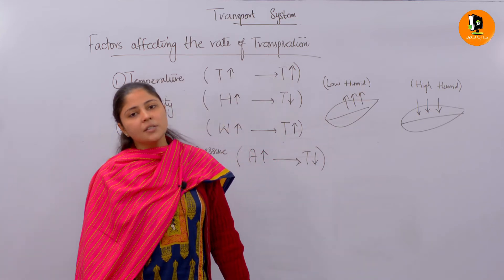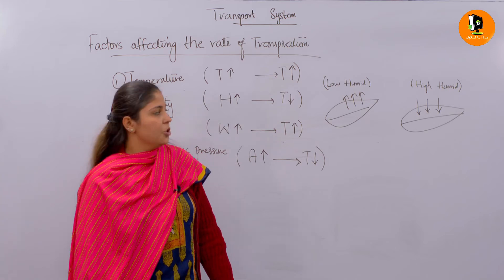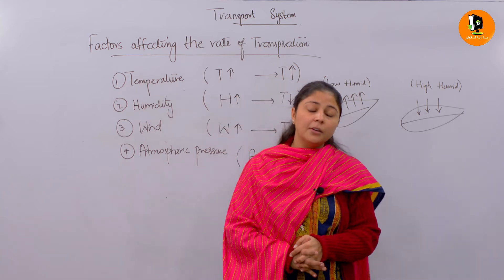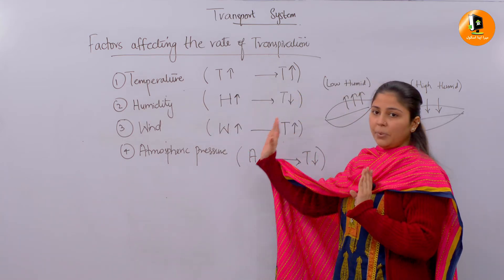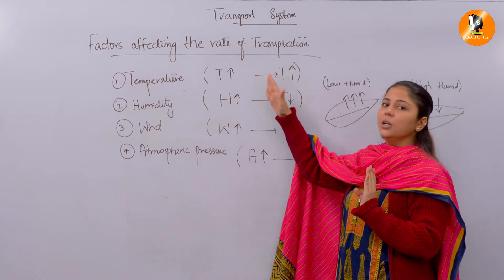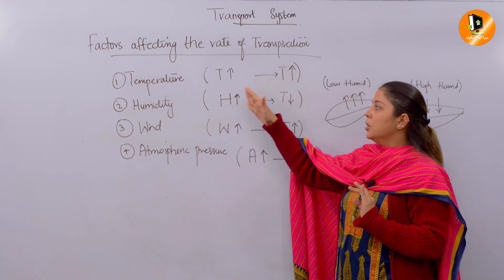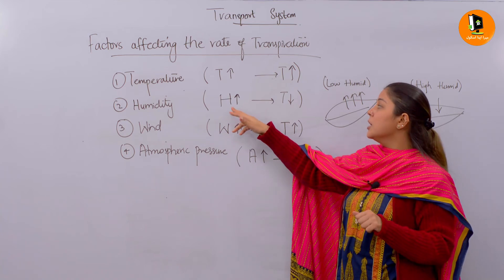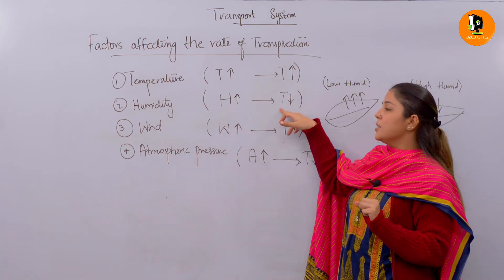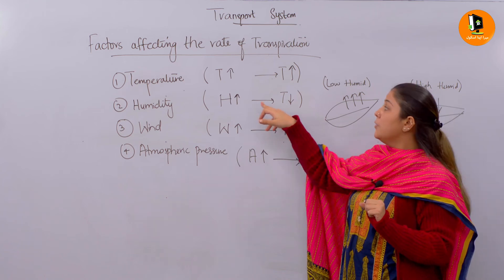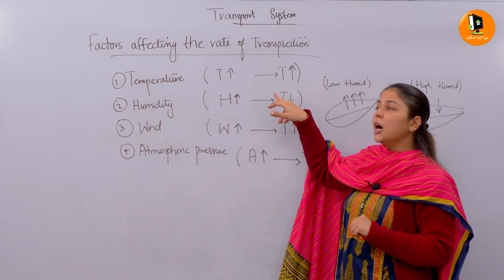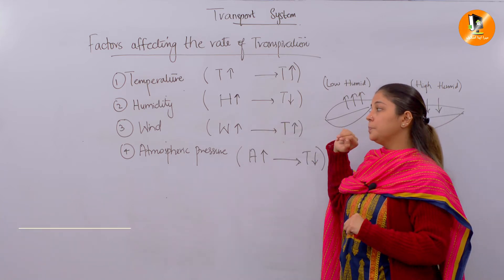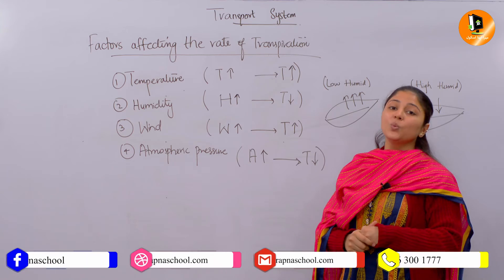So the second important factor is humidity. High temperature means high transpiration rate — they are directly proportional. Humidity and transpiration rate are inversely proportional: high humidity means less transpiration rate, and if there is less humidity, a high transpiration rate will occur.